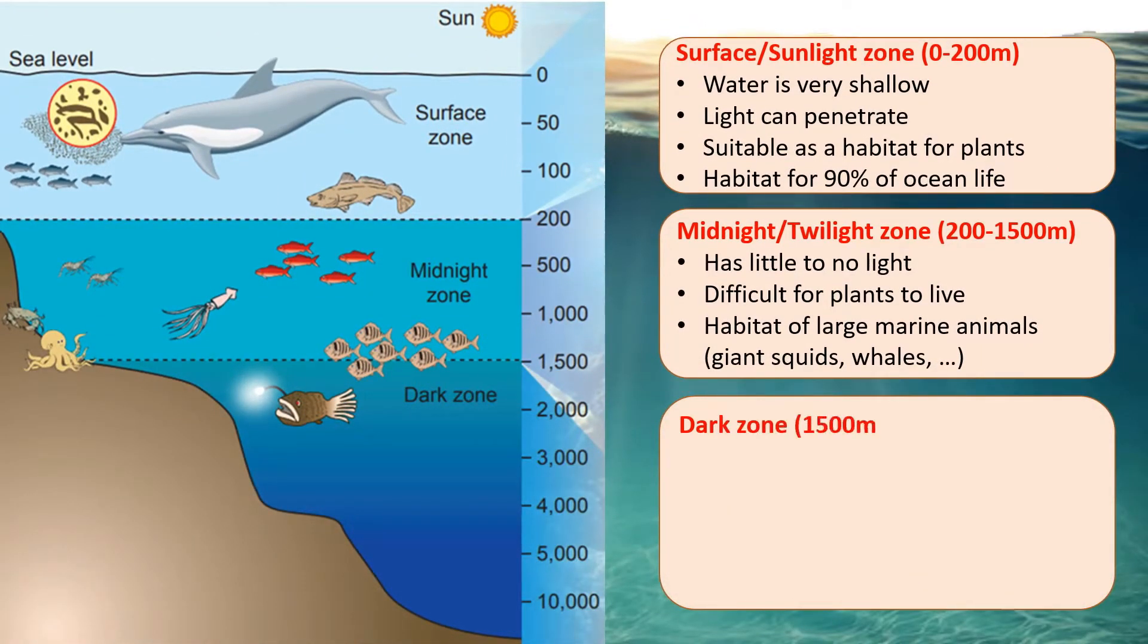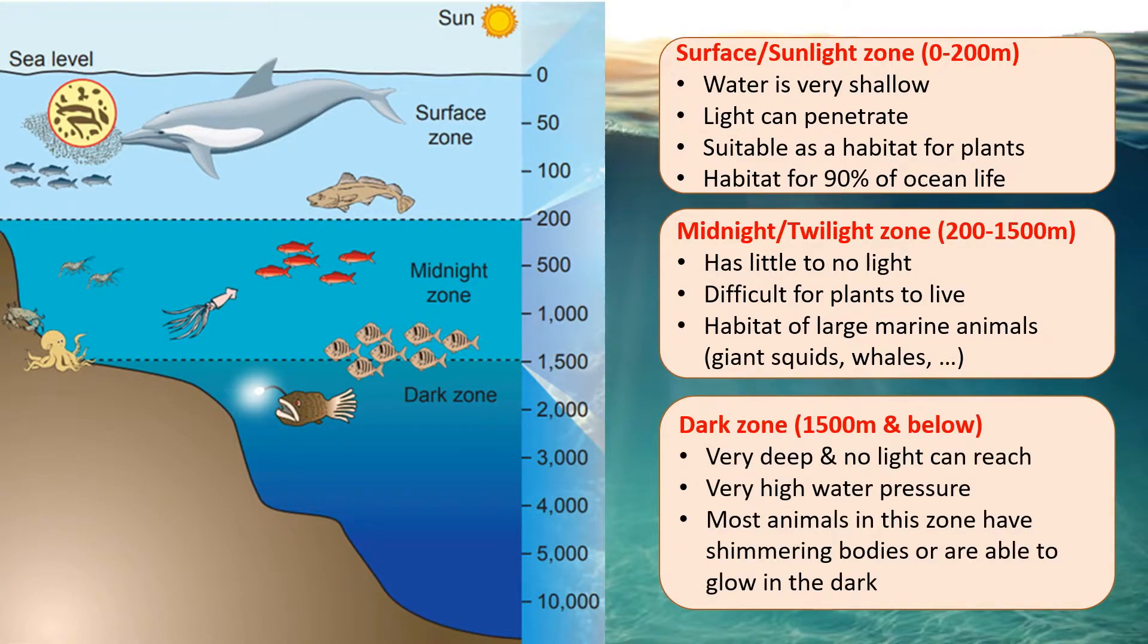Lastly, as we move below 1500 meters, we will be entering the dark zone which is very deep and no light can reach there at all. The area also suffers extremely high water pressure and most animals found in this zone actually have shimmering bodies or they are able to glow in the dark.